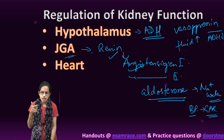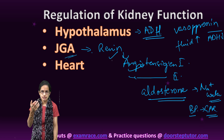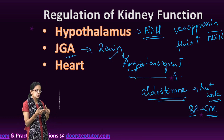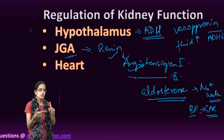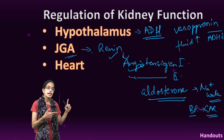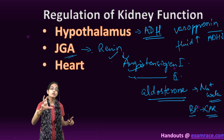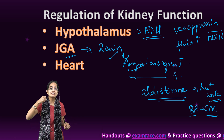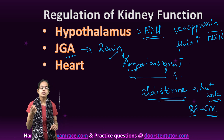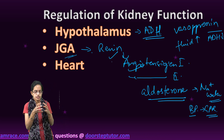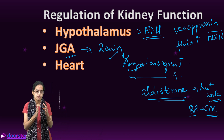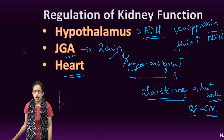To repeat: the juxtaglomerular apparatus secretes renin, which converts angiotensinogen to angiotensin 1 and finally angiotensin 2. Angiotensin 2 is a powerful vasoconstrictor that increases blood pressure in the glomerular filtration rate and glomerular blood flow, forming the renin-angiotensin mechanism.